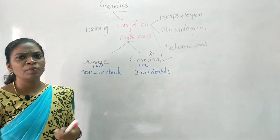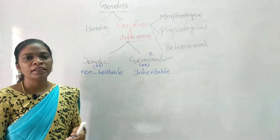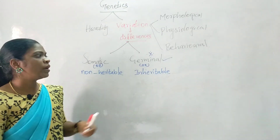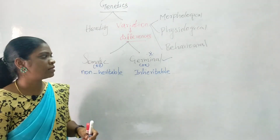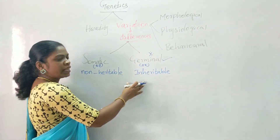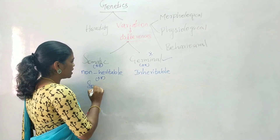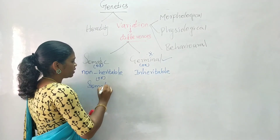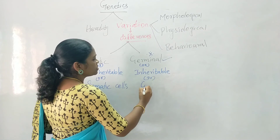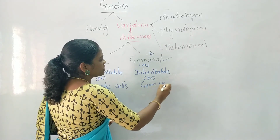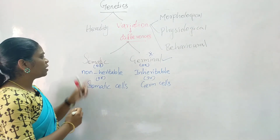Some variations may be advantageous and some variations may result in the death of organisms, but the advantageous variations will lead to the evolution of organisms. Somatic variation happens in your somatic cells, while germinal variation occurs in your germ cells, that is your sex cells or sex chromosomes.